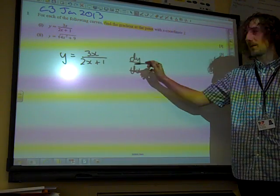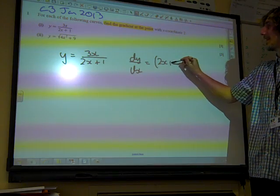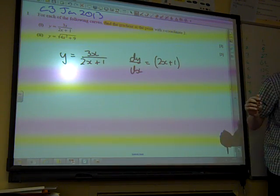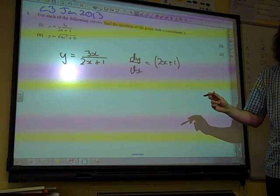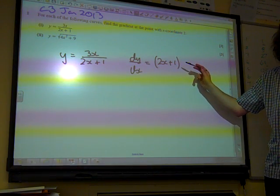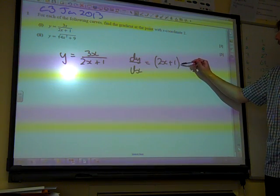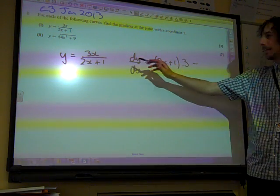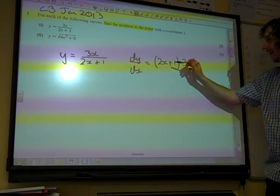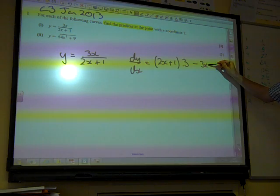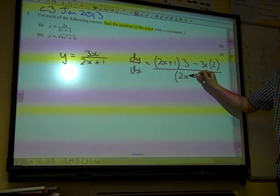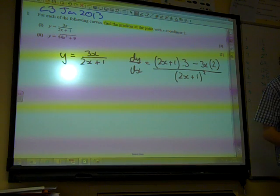Right, so it's v, 2x plus 1, times du by dx. du/dx is 3. Good, it's brilliant. Minus u times dv by dx, which would be 2, all over v squared. There we go.